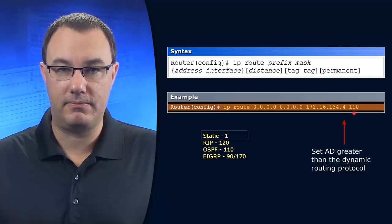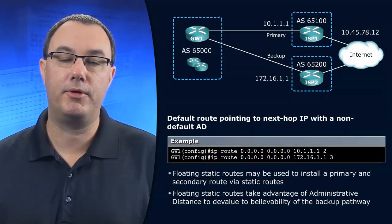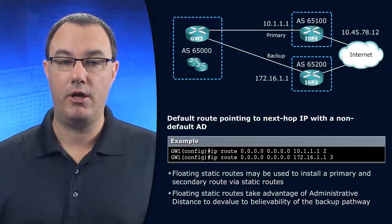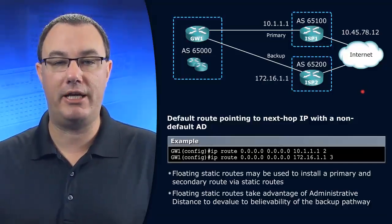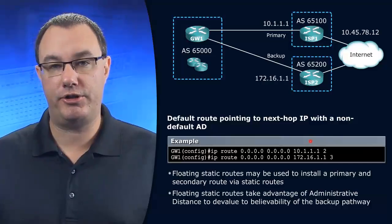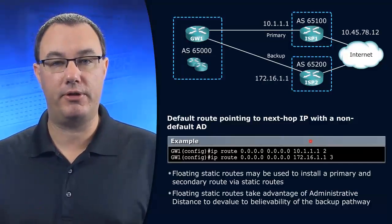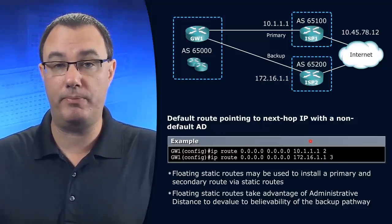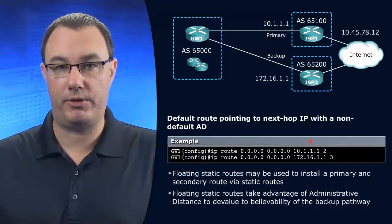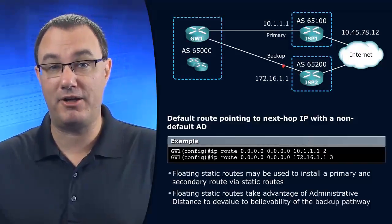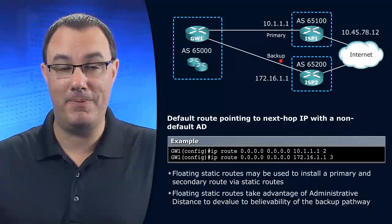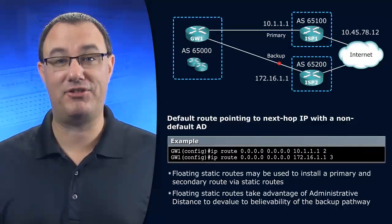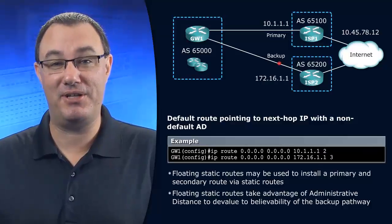This is a very powerful technique. Let's say you have a primary and a backup ISP and you want to install static routes pointing to each of them. If you did this without any extra intelligence — providing the default administrative distance of 1 to each of the static routes — you would in fact be load balancing. And that could be undesirable, because often your backup is not as fast. You wouldn't want to equally load balance across unequal pathways — that is called pinhole congestion.